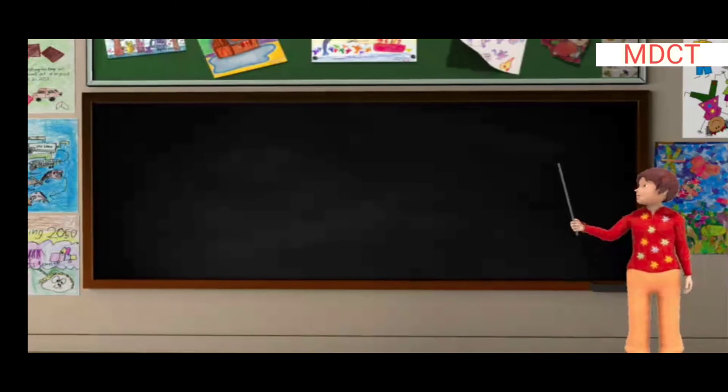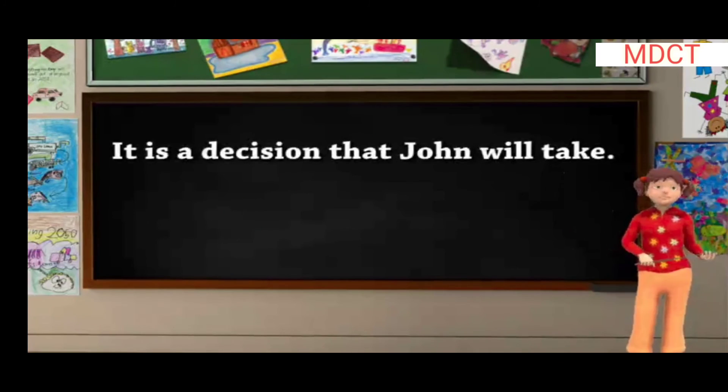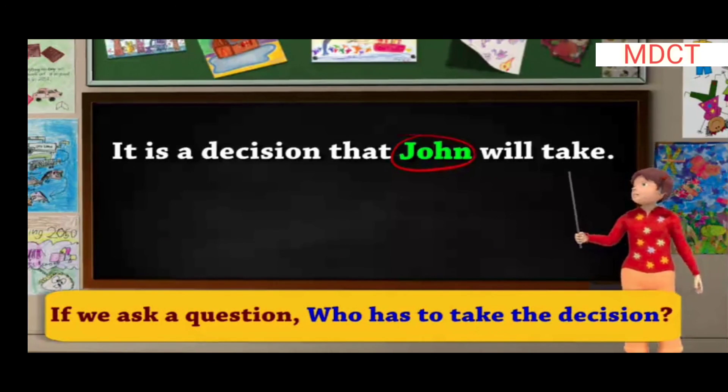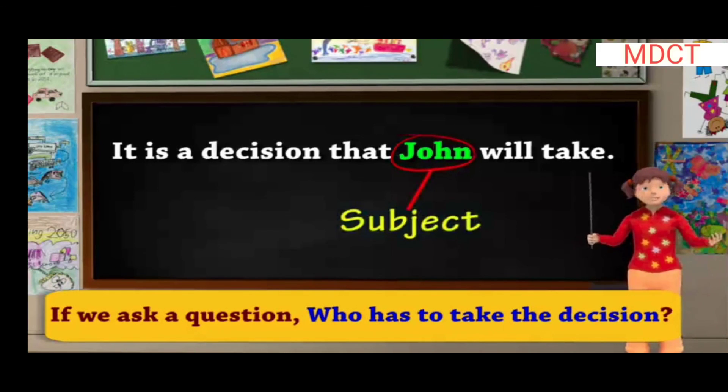Also, in the sentence, it is a decision that John will take. If we ask a question, who has to take the decision? The answer to this question will be the subject, which in this case is John.